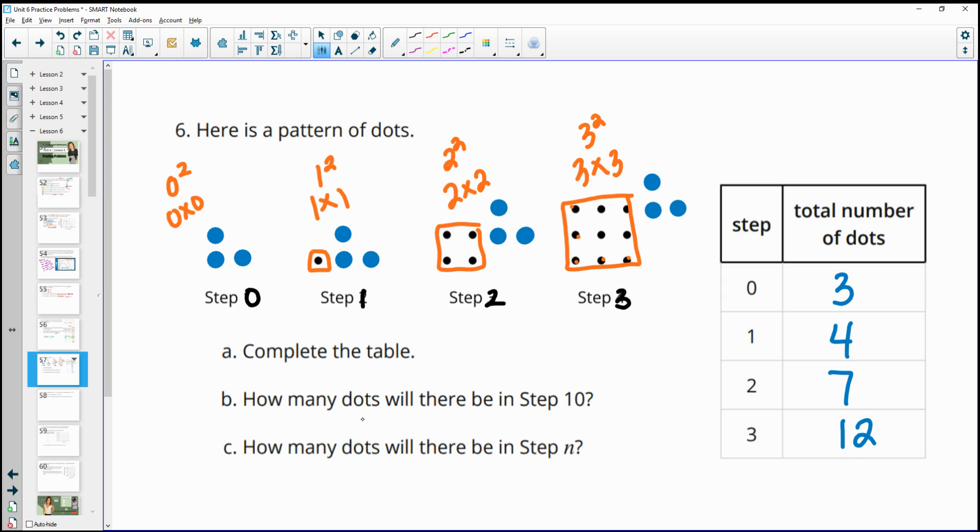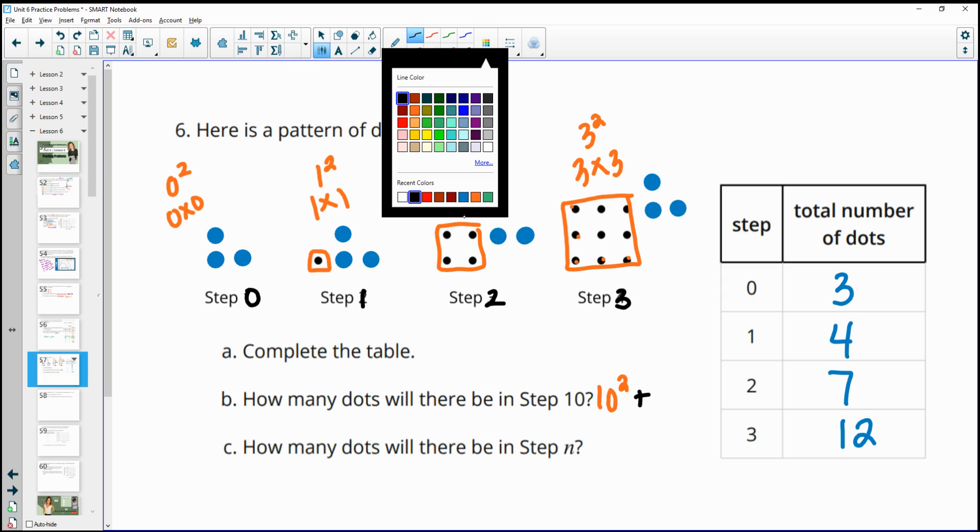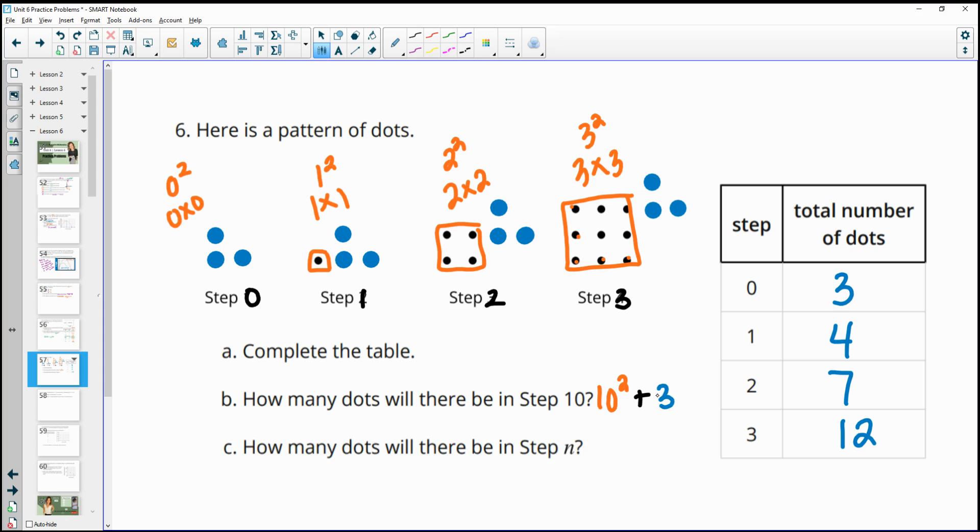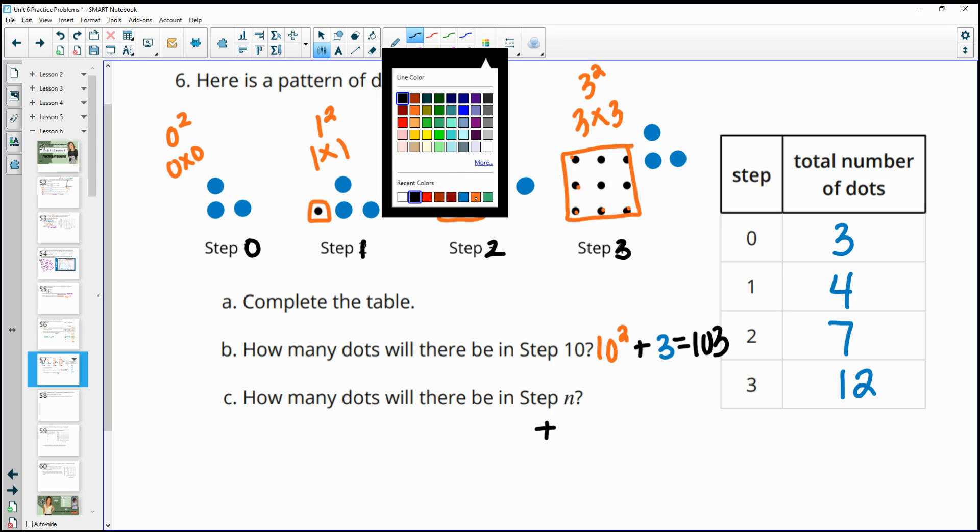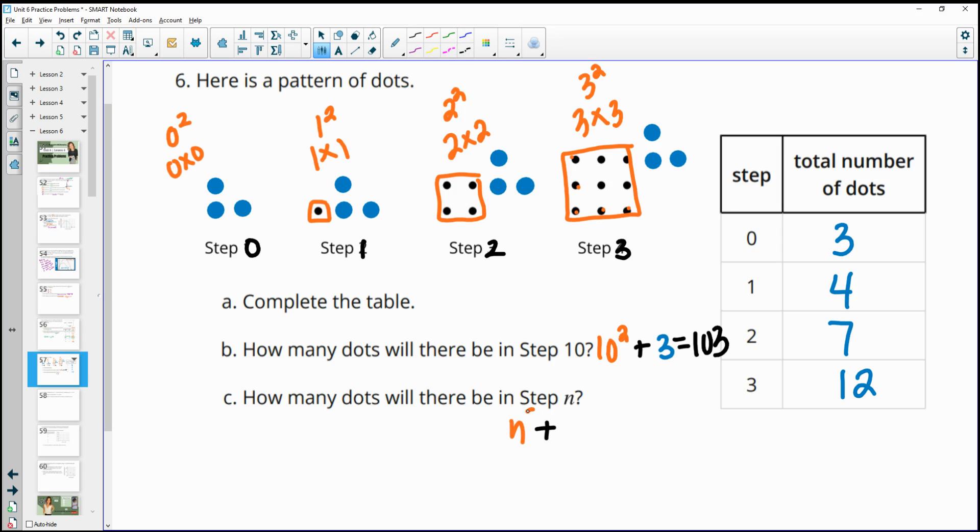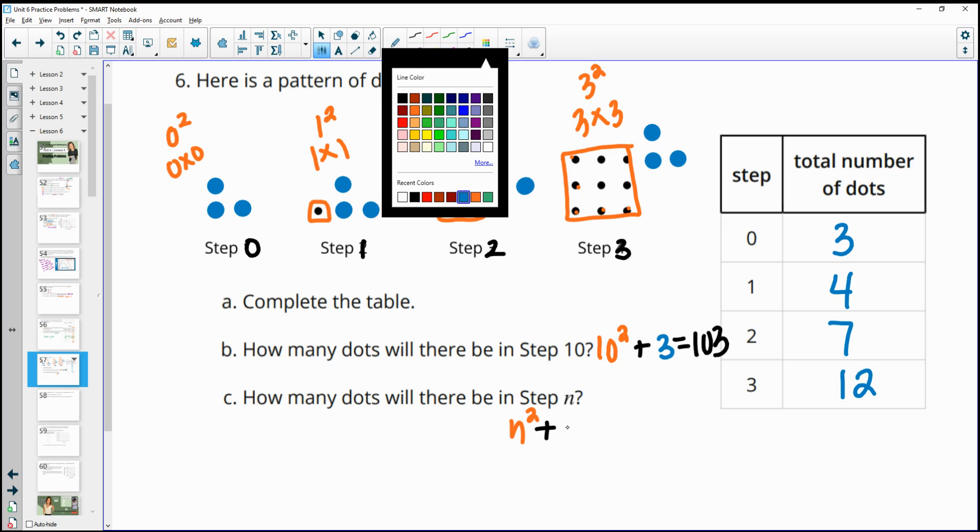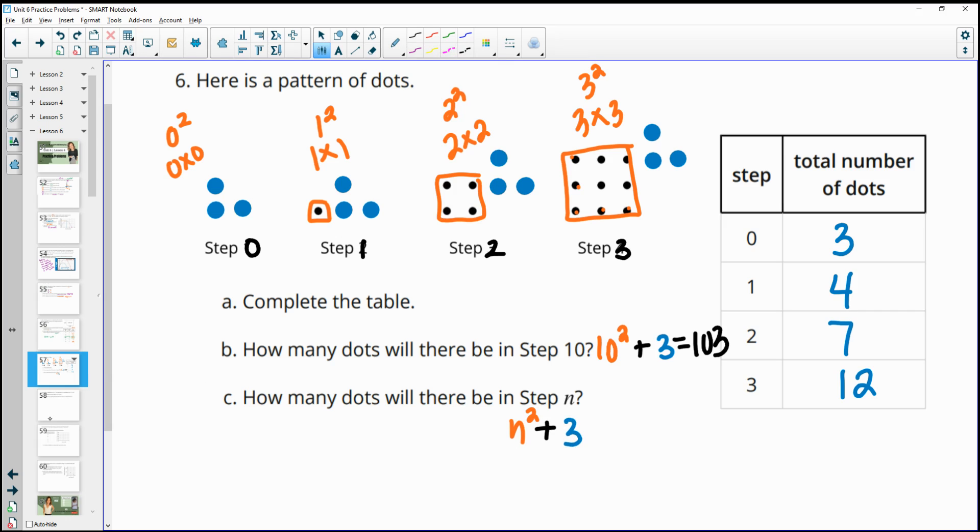So in step 10, we should have 10 squared plus those 3 extra dots. Which, if you multiply 10 squared, that's 100 plus 3 would be 103 dots in step 10. And then thinking about it that way gives us our pattern, right? So we're going to have, in step N, we should have an N squared. Okay? So N squared plus it should have those 3 extra dots. So N squared plus 3 there.